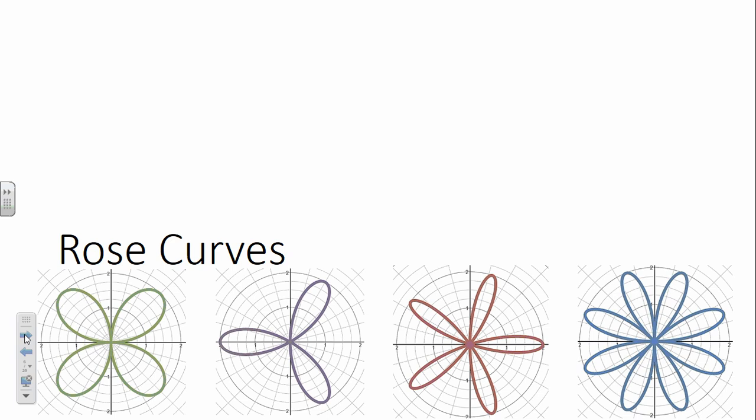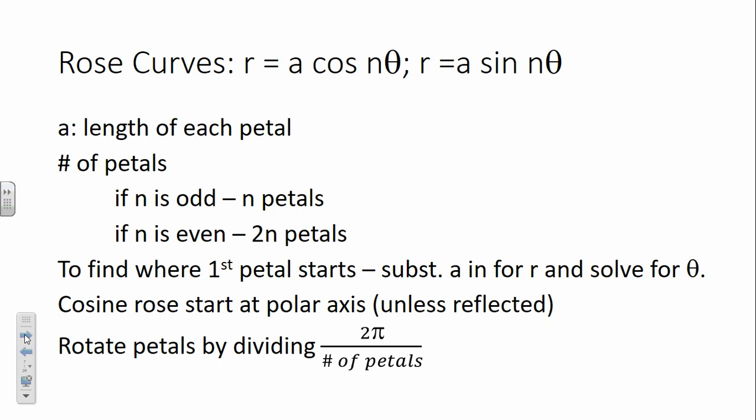So those are the easy ones. Next we're going to talk about rose curves. Rose curves are always of the form R equals A cosine of n·theta or R equals A sine of n·theta. A is the length of each petal. The number of petals is determined by n — when n is odd, we have n petals, but when n is even, we have 2n petals — always double.